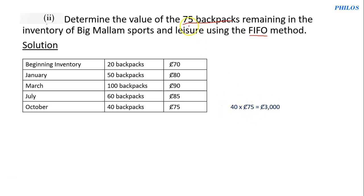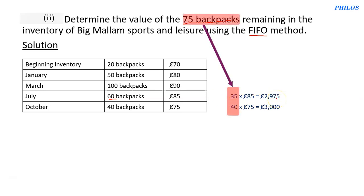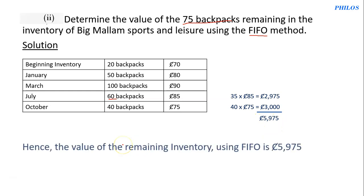When you deduct 40 from 75 you're left with 35. That 35 should come from the July batch of 60, meaning 25 were sold and 35 remain. So multiply 35 times 85, which gives 2,975. Then add the two together: 3,000 plus 2,975 gives 5,975. We conclude that the value of the remaining inventory using FIFO is 5,975.